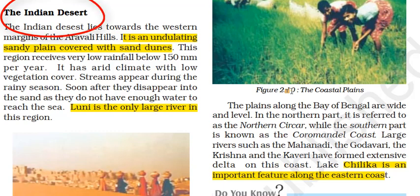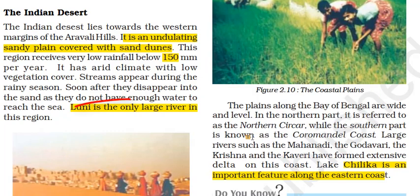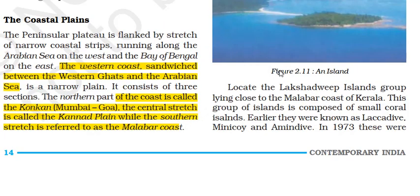Beyond the Aravallis is the Great Indian Desert, lying towards the western margin of the Aravalli Hills, characterized by sand dunes and sandy plains. Rainfall here is very low, around 150 mm only, giving it an arid climate with low vegetation cover. Streams appear only during the rainy season, and the Luni is the only large river in this region.